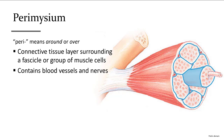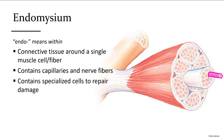These bundles of muscle cells are called fascicles. The perimysium surrounds and holds together the many fascicles within a whole muscle. The innermost layer wraps around each individual muscle cell inside a fascicle — the endomysium — which is just on the surface of a single muscle cell, right by the cell membrane.